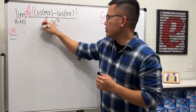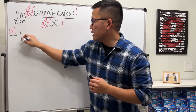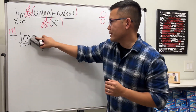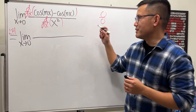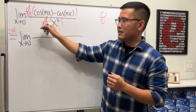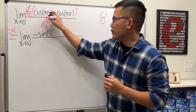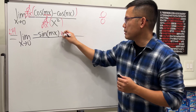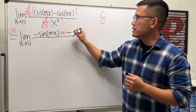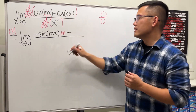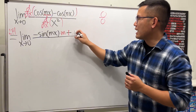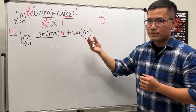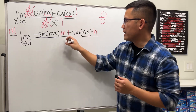Differentiate the top and differentiate the bottom. The limit as x approaches zero: be careful with the chain rule here. The derivative of cosine is negative sine, so we get negative sine(mx), then multiply by the derivative of mx which is m. For the second term, the derivative of negative cosine is positive sine, giving plus sine(nx), multiplied by the derivative of nx which is n. The derivative of x² on the bottom is 2x.